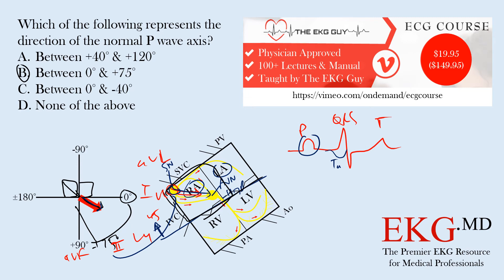The question is, which of the following represents the direction of the normal P wave axis? Normally, we're starting at the sinus node. It's not between positive 40 and positive 120 degrees, because that would be from positive 40 to positive 120 somewhere in this region. So it's obviously not that. We said the answer is between zero and positive 75 degrees. Zero to negative 40 degrees would be somewhere in here. That's not the answer. And we do have an answer choice, it is not none of the above, because our answer is between zero and positive 75 degrees.